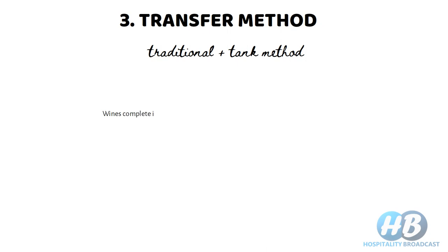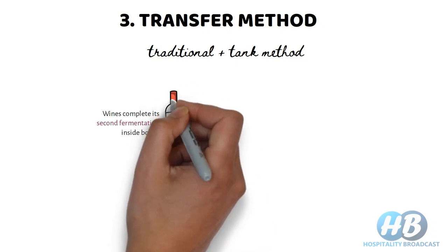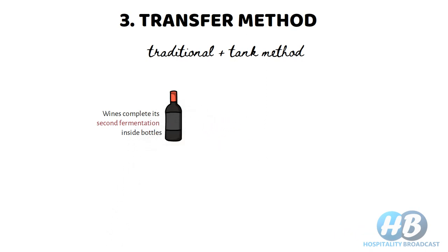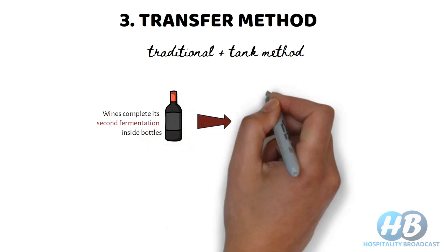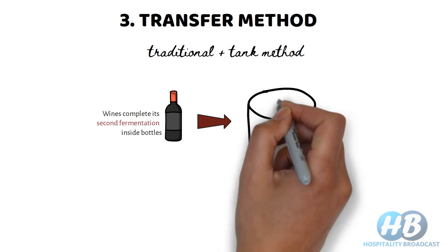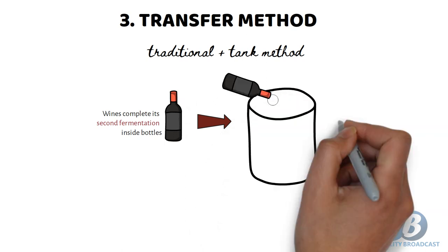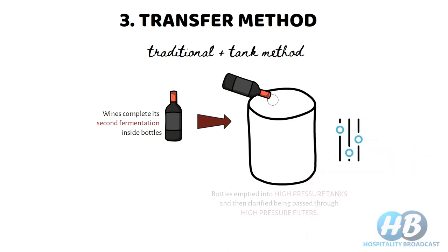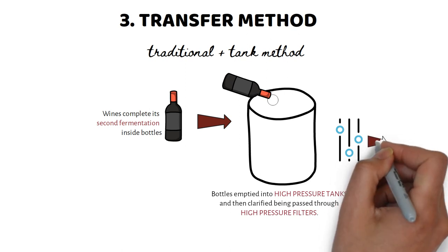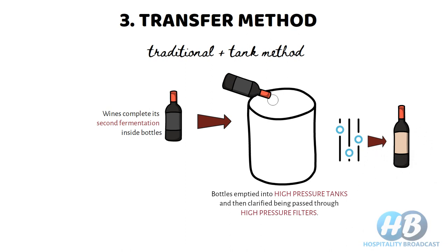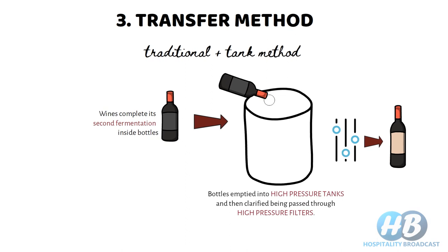The transfer method is similar to the traditional method up to secondary fermentation, which takes place inside bottles. After that, the wines are emptied into a pressurized tank and sent through pressurized filters to remove sediments, dead yeast, or lees. After filtration, the wine is packaged into new bottles. This saves the time spent in the process of riddling and disgorgement.